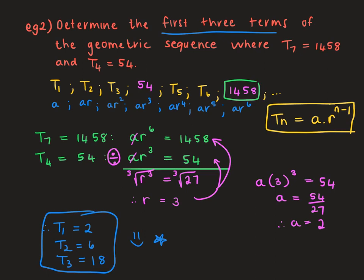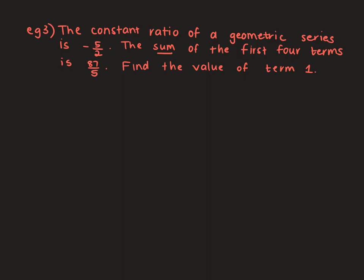Let's look at the next example. The constant ratio of a geometric series — and series is very important; a series is different to a sequence — is negative 5 over 2. The sum of the first four terms is 87 over 5. Find the value of term 1. The formula when summing a geometric sequence is: Sn equals A times R to the n minus 1, all over R minus 1.